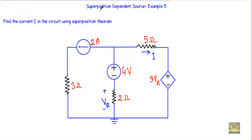This is the last example of this series: superposition dependent source example 5. In the circuit we have to find the current i using superposition theorem. The current i is the current flowing through this 5 ohm resistor. The circuit contains an independent current source, an independent voltage source, and a voltage dependent voltage source. Here is the voltage drop across the 2 ohm resistor, so this is a voltage dependent voltage source.